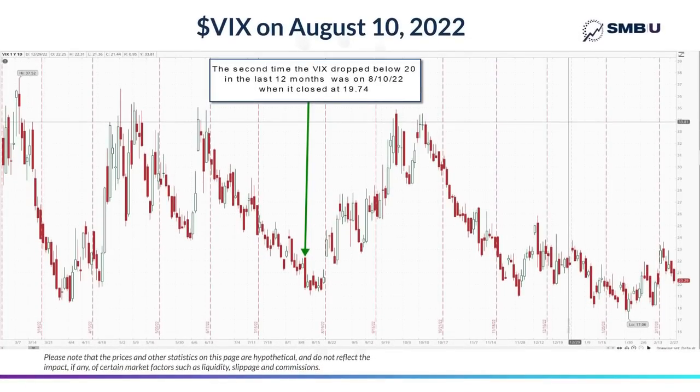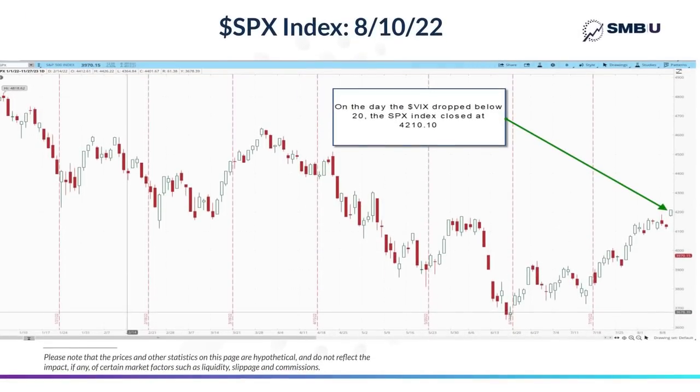Let's move to the next time in the last 12 months where the VIX fell below 20, which was on August 10th, 2022, when it closed for the first time since March below 20, that day closing at 19.74. That day, the SPX closed at 4210. And so again, we'll go out a few months to the October expiration.